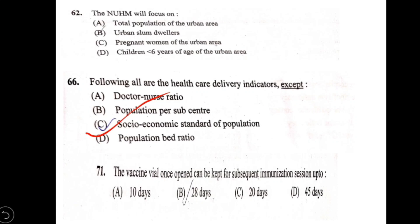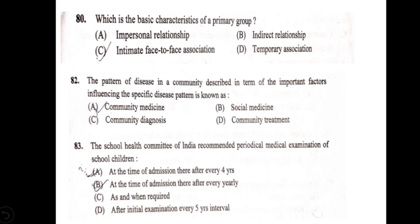Question 66: all of the following are healthcare delivery indicators except — options: A) doctor-nurse ratio; B) population per sub-center; C) socio-economic standard of population; D) population-bed ratio. Socio-economic standard of population is a community development or community medicine indicator, not a healthcare delivery indicator. Option C is correct. The vaccine vial, once opened, can be kept for subsequent immunization sessions up to 28 days. Characteristics of a primary group include intimate face-to-face association. Option B is correct.